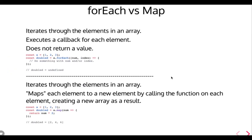forEach and map — what are the uses? Map is immutable; it doesn't change anything on the existing array. It will always give you a new array as the result. forEach is used for iterations — you just iterate over the elements and do something with the index, but you are not changing the existing array. You can generate new values and new things by iteration. So it's just like a plain for loop.